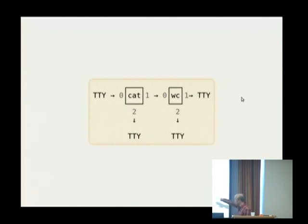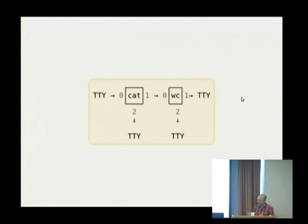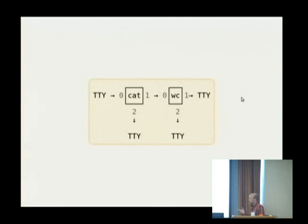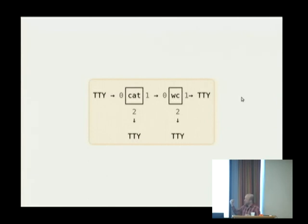If that was all — if all we had was an input and an output — then even our error messages would get mixed in with the data that the word count command is trying to consume. The magic is that there is a third default file, given the number two, because we all count from zero. Unless you redirect it, it is by default hooked up to the TTY so that error messages cat produces are not interleaved and mixed up with the data that cat produces.